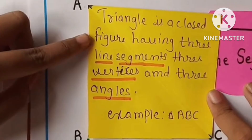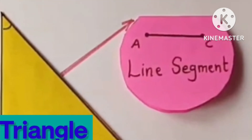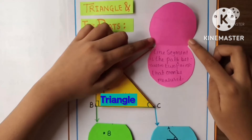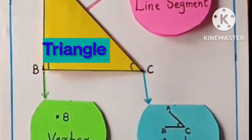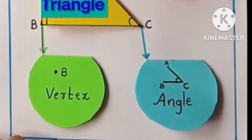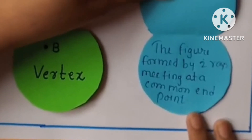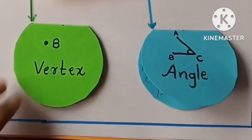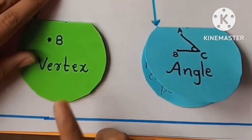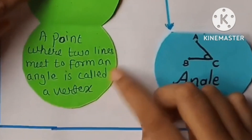Now let's see the parts of triangle. The first one is line segment — here is the definition of line segment. The second part is angle — here is the definition of angle. The third part is vertex — here is the definition of vertex.